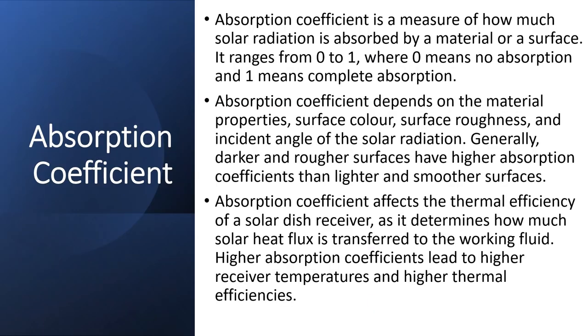Absorption coefficient is a measure of how much solar radiation is absorbed by a material or surface. It ranges from 0 to 1, where 0 means no absorption and 1 means complete absorption. Absorption coefficient depends on the material properties, surface color, surface roughness, and incident angle of the solar radiation. It determines how much solar heat flux is transferred to the working fluid. Higher absorption coefficients lead to higher receiver temperatures and higher thermal efficiencies.